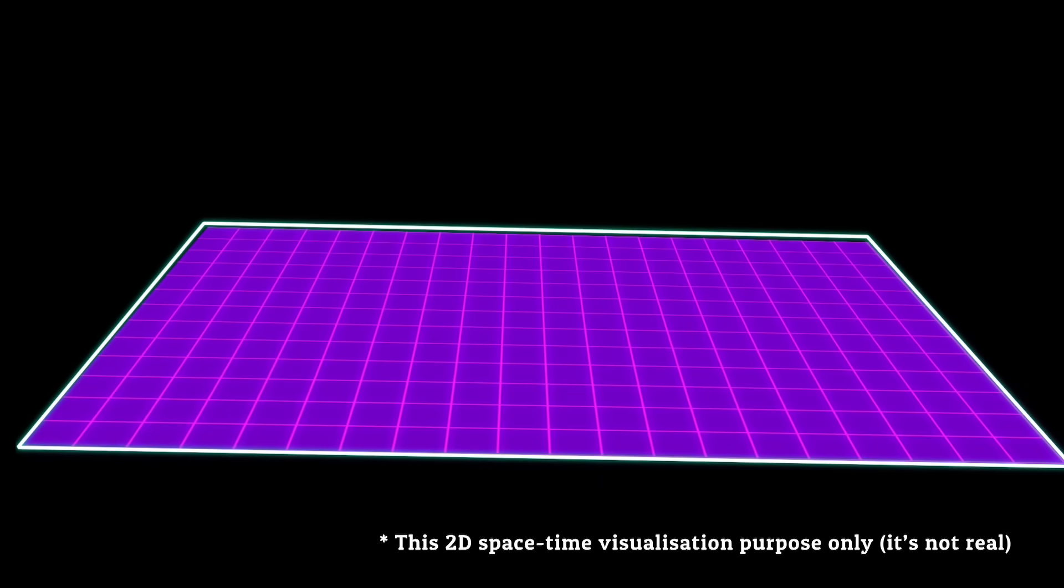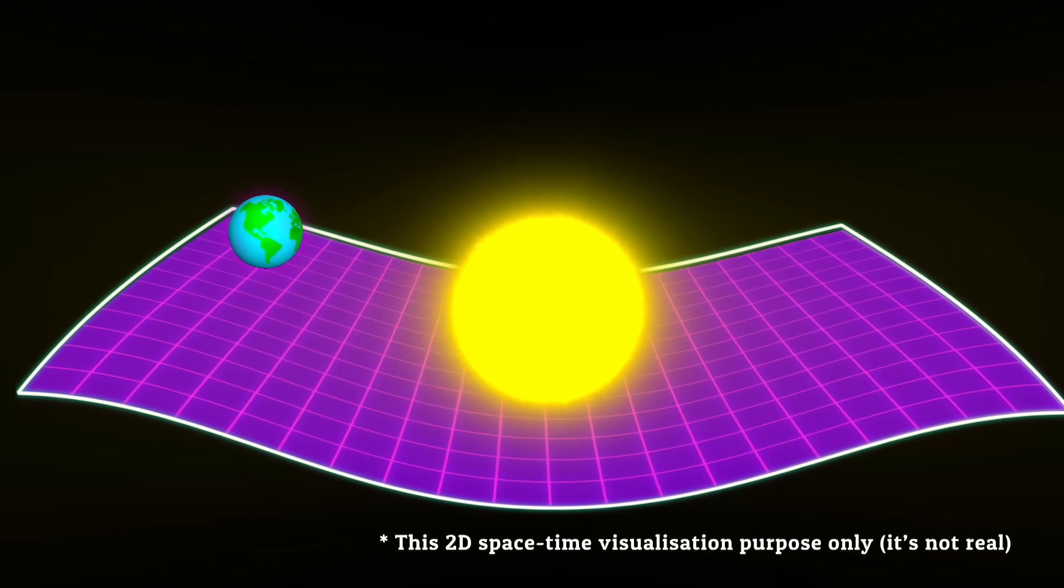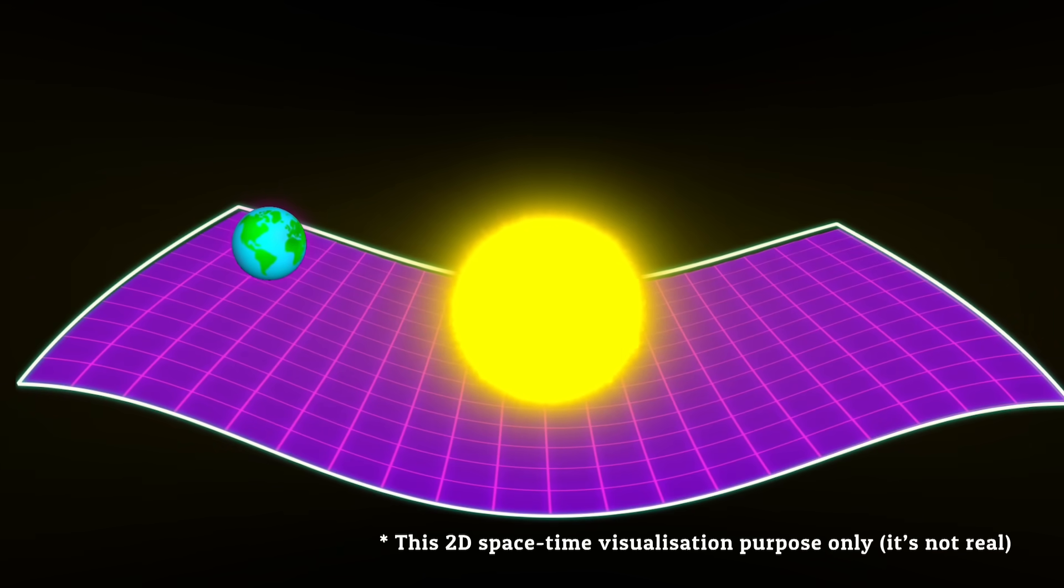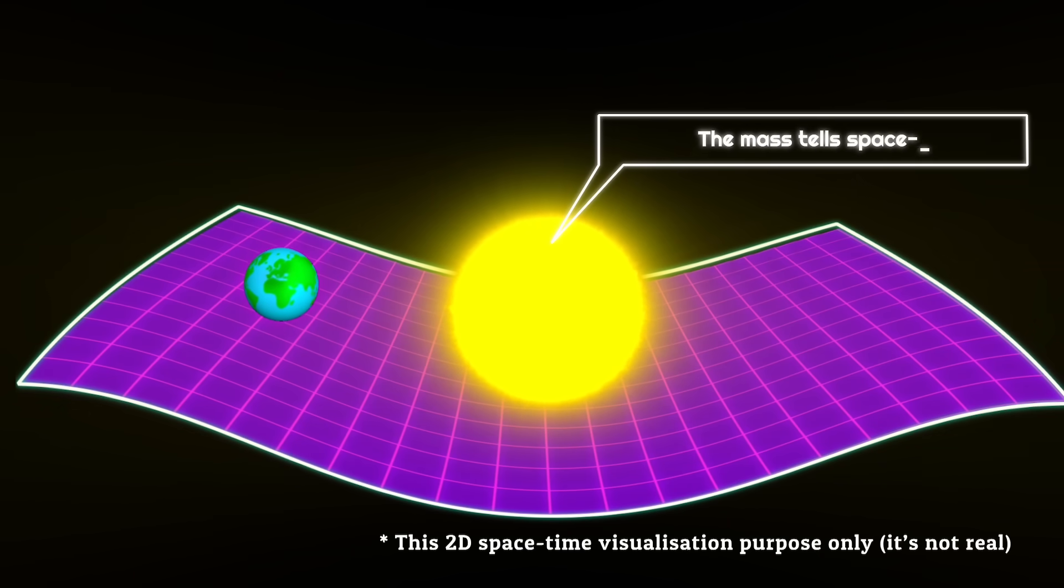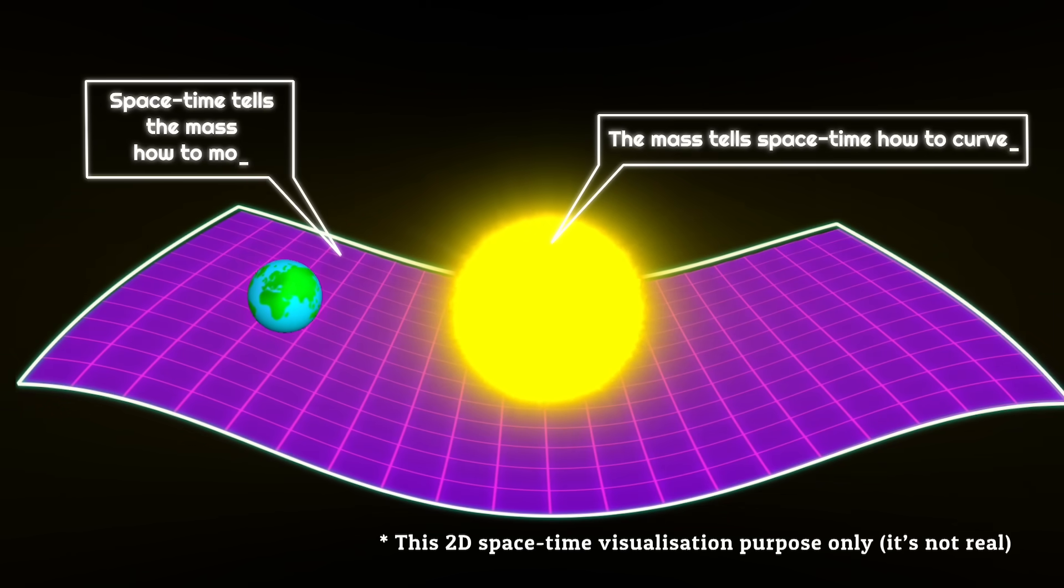Similarly, gravity occurs for everything in the universe. As the Sun bends space-time, the Earth is attracted towards it. It is not a force. As space bends, it has an impact on the objects on the curve. The mass tells space-time how to curve. Space-time tells the mass how to move.